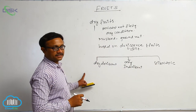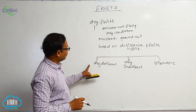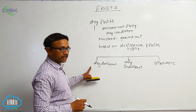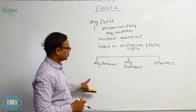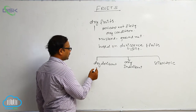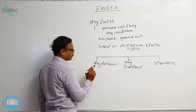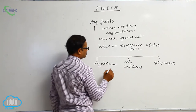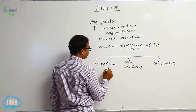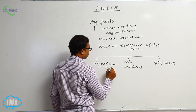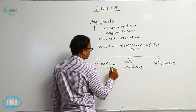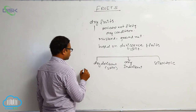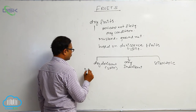Dry dehiscent — at the time of mature condition, if a dry fruit splits, they are known as dry dehiscence fruit. Dehiscence means a split. First one is the legume.